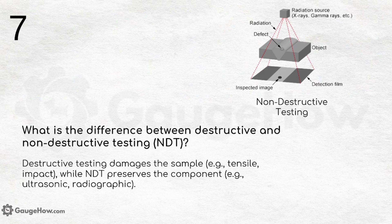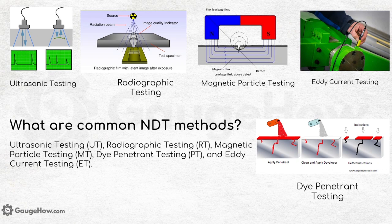What is the difference between destructive and non-destructive testing? Destructive testing damages the sample — for example, tensile, impact, and compressive tests, similar to crash tests cars undergo before launch. Non-destructive testing preserves the component, with examples including ultrasonic or radiographic tests.